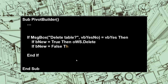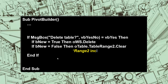If B New is false, then we have to talk to O Table, the table range 2, and we clear it. Range 2 includes the page field, while Range 1 would not include the page field.